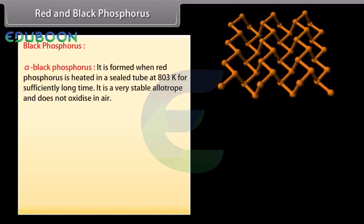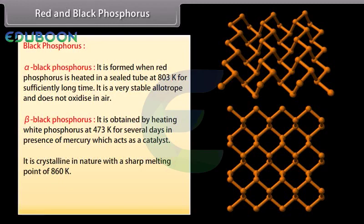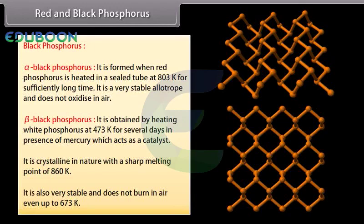Black phosphorus has two forms. Alpha black phosphorus is formed when red phosphorus is heated in a sealed tube at 803 K for a sufficiently long time; it is a very stable allotrope and does not oxidize in air. Beta black phosphorus is obtained by heating white phosphorus at 473 K for several days in the presence of mercury, which acts as a catalyst; it is crystalline with a sharp melting point of 860 K and is also very stable, not burning in air even up to 673 K.